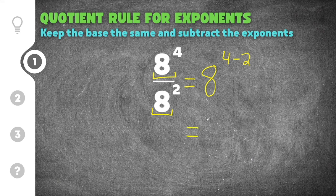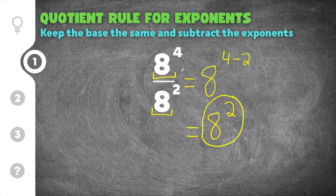In order to simplify this, you keep the base the same and then you subtract the exponents. 4 minus 2 is 2, so our solution to this problem is 8 to the 2nd power. All I did was rewrite the base — we have to keep the base the same, and the base in this case is 8. Then for the exponents, they're going to get subtracted: we did 4 minus 2 and got 2. Our final solution to this quotient rule problem is 8 to the 2nd power.